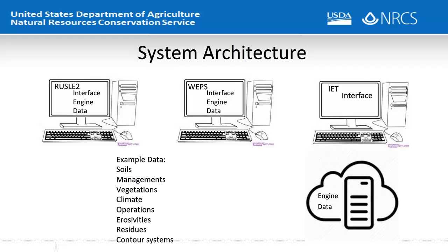If one part of that system needs to be updated, it has to be updated on every computer running the software — and there are many NRCS office computers with RUSLE2 or WEPs installed. So if the climate database is updated, it has to be manually updated on every one of those computers. In IET, the user interface is installed on the computer, but the calculation engines and data are stored in the cloud on servers in Fort Collins. If the climate database needs to be updated, it is done on the server and all computers running IET across the nation instantly use the updated information.